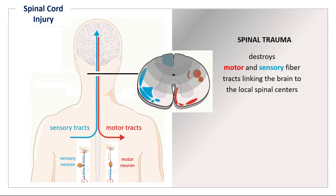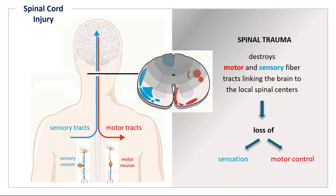Injuries in the cervical spinal cord produce tetraplegia. Injuries in the lower part of the spinal cord produce paraplegia, which is only affecting the legs.